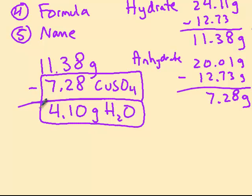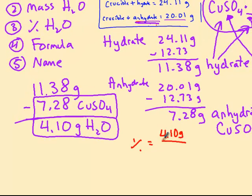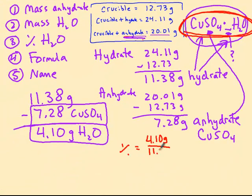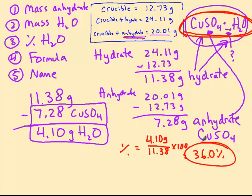Alright, so what would be the percent of water? The percent of water is going to be equal to the mass of water, 4.10 grams. Remember, part over the whole times 100. So what number do I want to use down there? Well, I want to use the mass of this whole thing, this copper sulfate and the water, which was the mass of the hydrate, 11.38 grams times 100. So I get 4.10 divided by 11.38 times 100, and it comes out to be 36%. So the percentage of water in copper sulfate, the hydrate that we did the lab with, is 36% water.